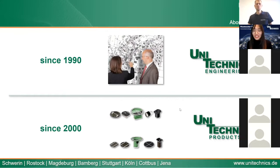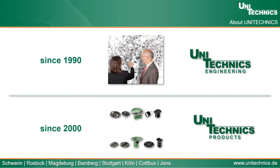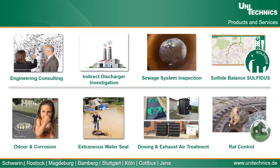Since 2000 we also started developing and producing products against odor and corrosion in sewer systems. Here is a range of products and services we offer. Besides engineering consulting, we investigate indirect dischargers in a given region or city, inspect sewer systems with drone and camera balls, and developed software called Sulfidus to calculate sulfide levels in sewer systems. We also have products against odor, corrosion, and extraneous water, and can design dosing systems and exhaust air treatment. Today we will talk about rat control in the sewers.